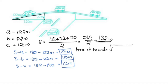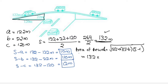The area of the triangle using Heron's formula is: Area = √(S × (S−A) × (S−B) × (S−C)) = √(132 × 10 × 110 × 12).